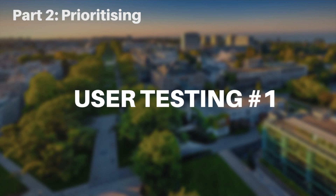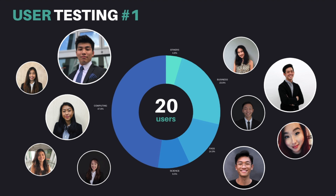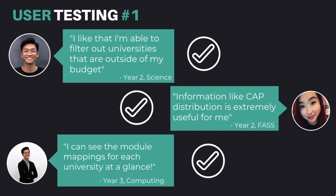Next, our prioritising phase. Our features were presented to our users for a second round of user testing. We showed our Clickable prototype to 20 users who have gone on exchange in the past two years across five different faculties and asked them what features they found useful and not useful, as well as what other features they would like to see. Users found that being able to filter partner universities by average expenditure and CAP was useful, and they do not need to waste their time applying for universities outside of their budget and academics. They also found that seeing a list of pre-approved modules and popular mapped modules for each university helpful, as this was one of the highlighted pain points for our users.